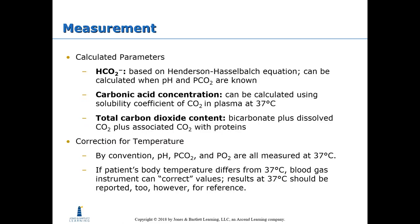Calculated parameters: bicarbonate is based on the Henderson-Hasselbalch equation and can be calculated when pH and pCO2 are known. Carbonic acid concentration can be calculated using the solubility coefficient of carbon dioxide in plasma at 37°C (body temperature). Total carbon dioxide content equals bicarbonate plus dissolved carbon dioxide plus carbon dioxide associated with proteins. By convention, pH, pCO2, and pO2 are all measured at 37°C; if a patient's body temperature differs, the blood gas instrument can correct the values, though results at 37°C should also be reported for reference.